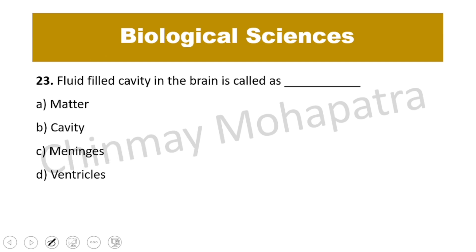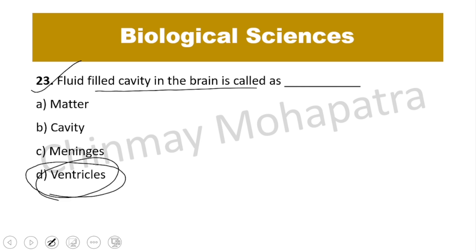Question number 23: Fluid-filled cavities in the brain are called — the right answer is ventricles. Inside the ventricles, the fluid present is called cerebrospinal fluid.